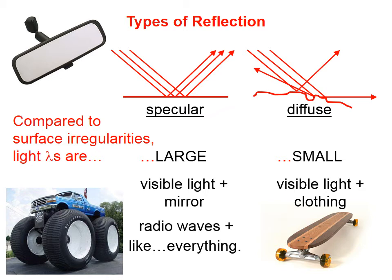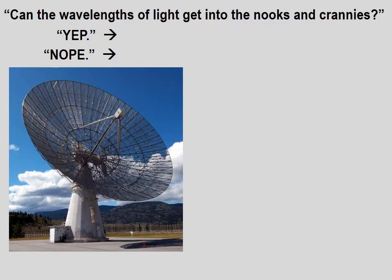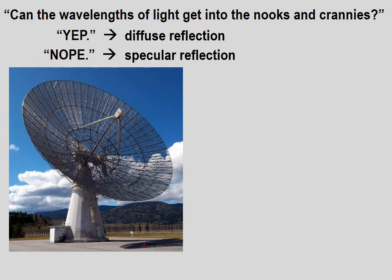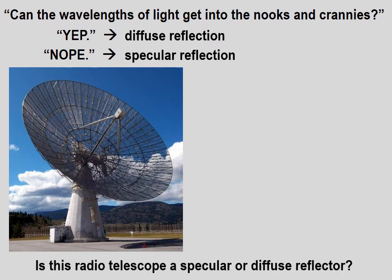If the wavelengths of light are small relative to the imperfections of the surface, you're going to get diffuse reflection. If the surface irregularities are very tiny and the wavelengths are much bigger, then you're going to get specular reflection. Can the wavelengths of light get into the nooks and crannies? If yes, then you have diffuse reflection. If no, then you have specular reflection.